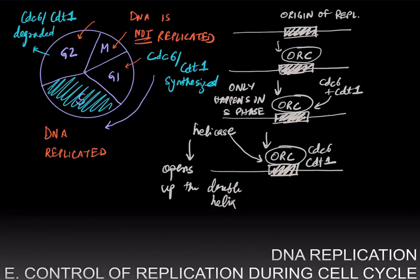This only happens in S phase, since that is the only time that CDC6 and CDT1 are available. This group of proteins — the ORC, CDC6 and CDT1 — together recruit helicase. Helicase opens up the double helix by breaking the hydrogen bonds, and that's how you get the replication forks. This entire process will only happen in S phase, because when you're not in S phase, you don't have CDC6 or CDT1, so you do not recruit helicase, the double-stranded DNA is never opened up, there is no replication fork, and therefore DNA synthesis cannot be carried out.